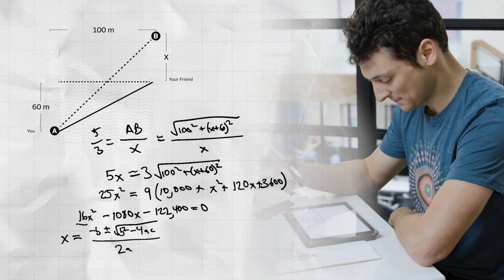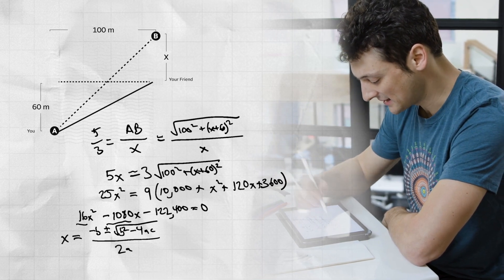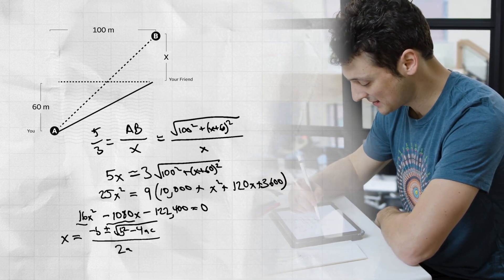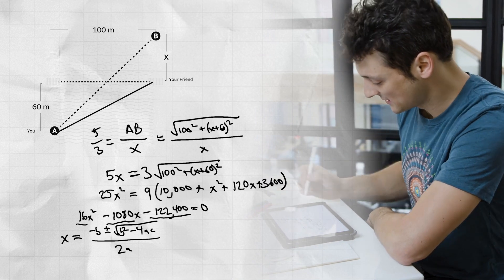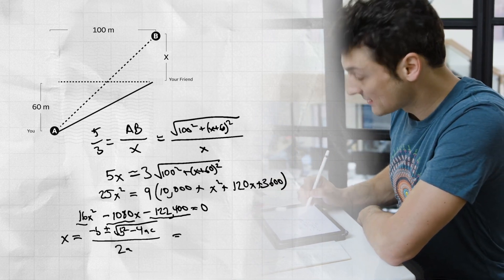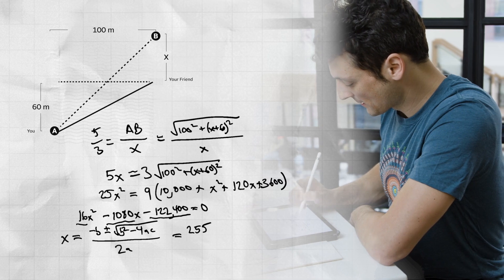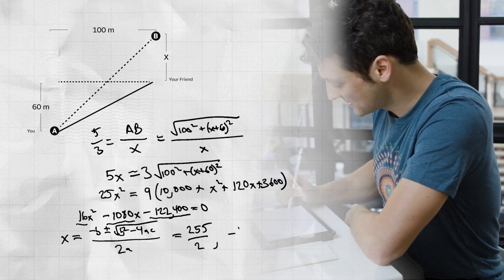And a is equal to 16, b is negative 1080, and c is negative 122,400. So this gives x equals 255 over 2 or negative 60.